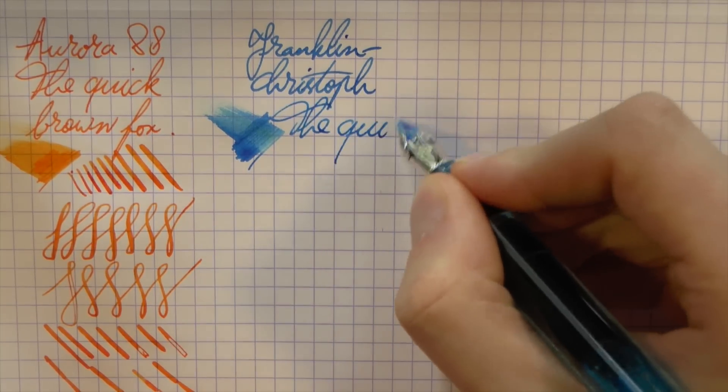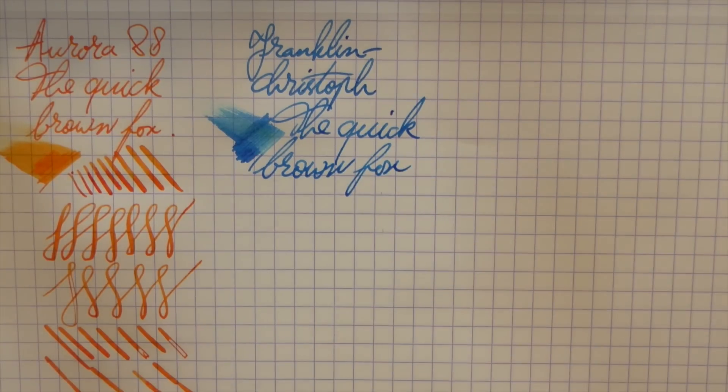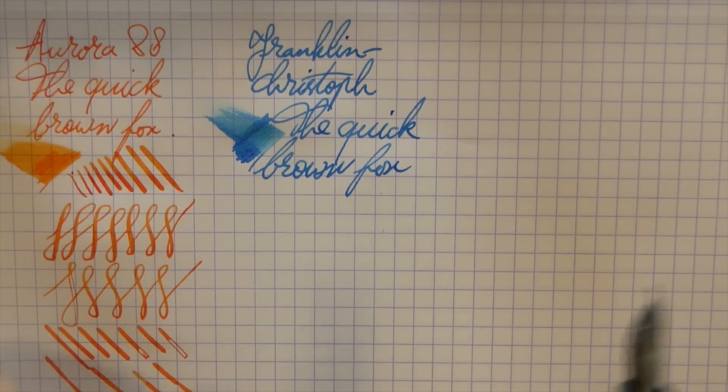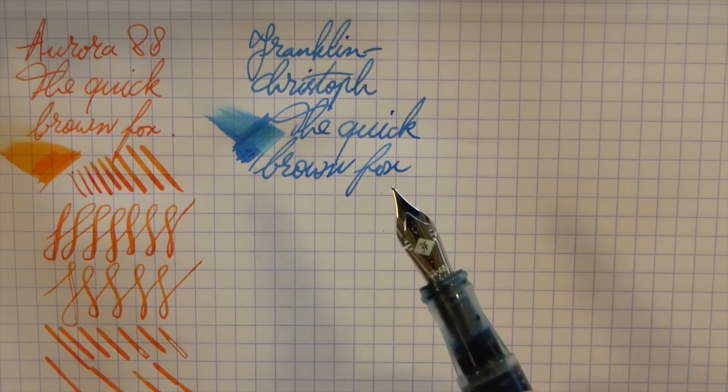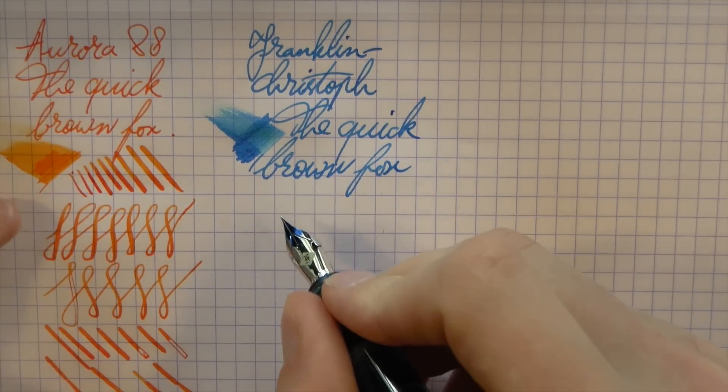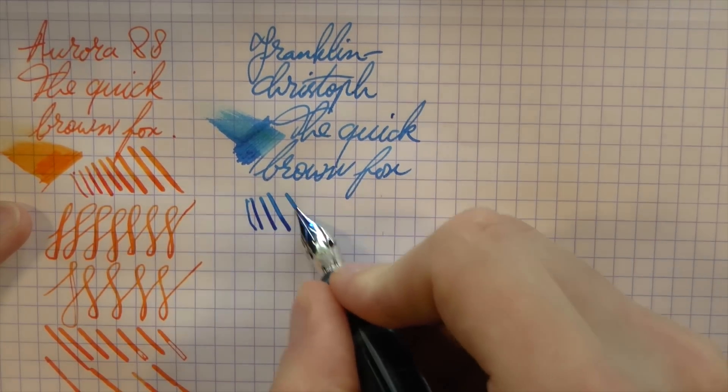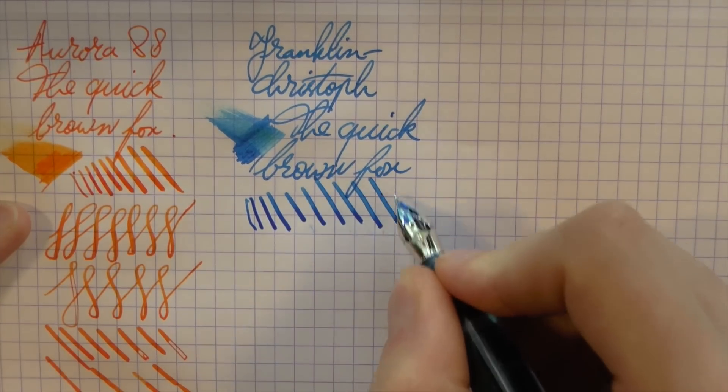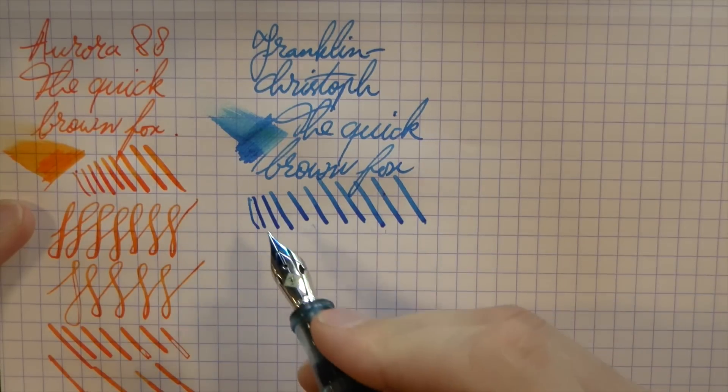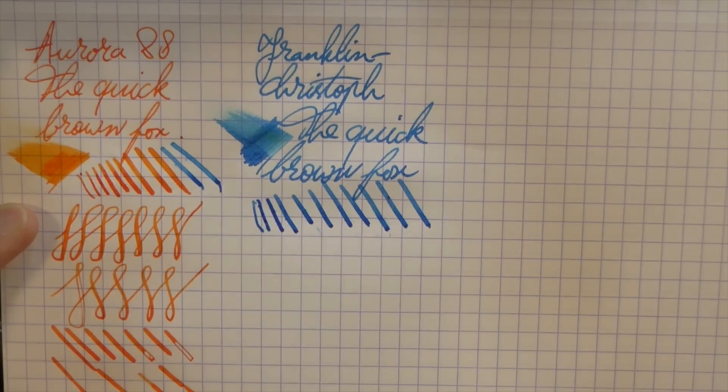This nib I find wetter than the Aurora nib. I'll do some normal writing too. You can get this nib just as a stock round nib option from Franklin Christoph. And you can also get it in what they call their stub italic gradient, which I have done a review of as well in my regular Franklin Christoph flex nib video. I show off that nib and tell you what the advantages of that is. It does maximize line variation. But I thought, as the other two nibs here are round nibs, I would pick this for this comparison. I think you get slightly less line variation as in the Aurora, maybe. Although the difference is marginal.